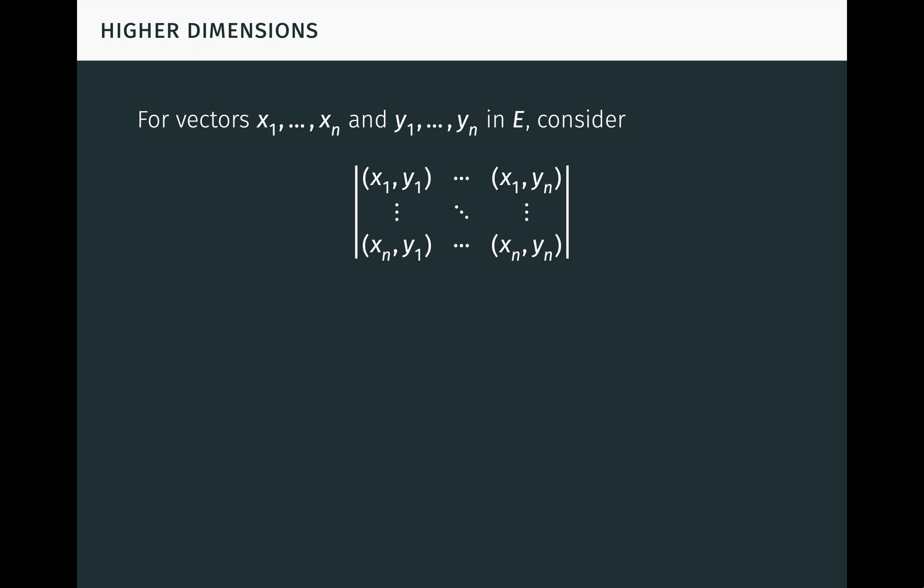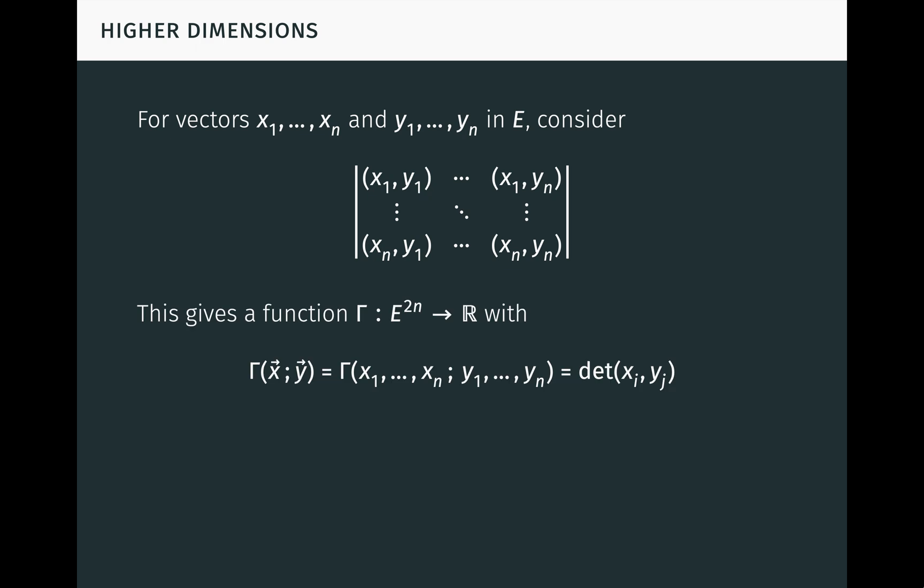In this determinant, we have x1 across the first row, x2 across the second row, and so on down to xn across the nth row. Dually, we have y1 down the first column, y2 down the second column, and so on over to yn down the nth column. The x's in the rows and the y's in the columns are multiplied together using the inner product to form the single n-by-n determinant. This construction gives rise to a function gamma from E to the 2n to R, which maps the x's and y's to the value of the determinant. Note that we write x with an arrow over it as shorthand for x1 to xn, and similarly for y, just to save space.